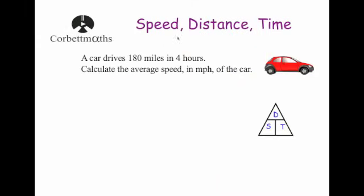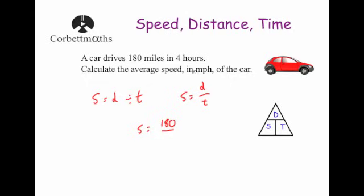Now let's look at some exam questions. A car travels 180 miles in four hours — find the average speed in miles per hour. Speed equals distance divided by time, so speed = 180 ÷ 4 = 45 miles per hour. Remember to include your units. Check: 4 × 45 = 45, 90, 135, 180 — yes, in four hours it covers 180 miles.